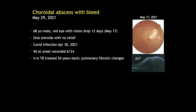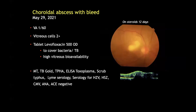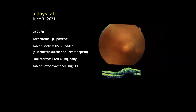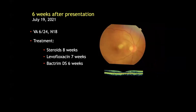In May this year, we had a 68-year-old male with complaints of red eye and vision drop that had started two weeks after his COVID infection. He was on steroids when he came to us. We placed him on additional tablet levofloxacin and investigated him for the subretinal lesion. Toxoplasma IgG was positive in the serum and so tablet Bactrim was added to his treatment. At six weeks there was complete resolution of the lesion, but the etiology remains unclear.